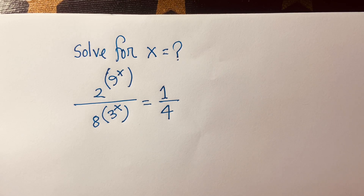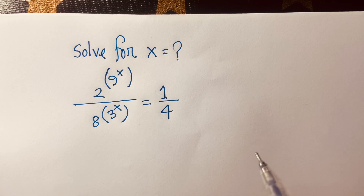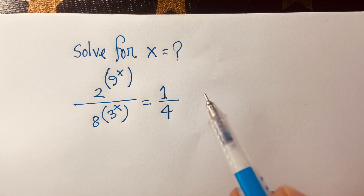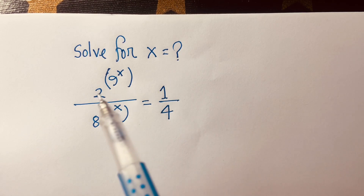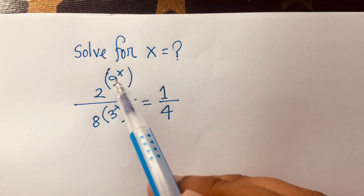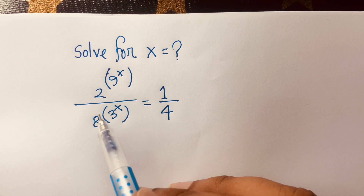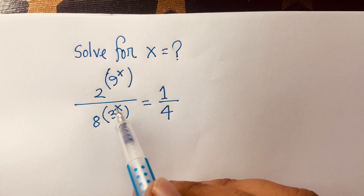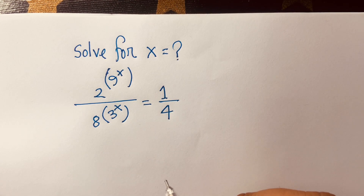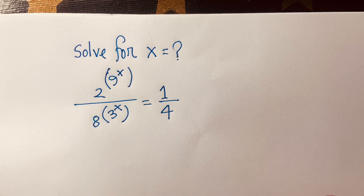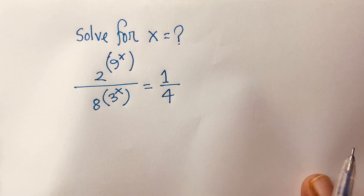Hello everyone. In this video I solve this exponential equation for x. Here is 2 to the power 9^x and here is 8^(3^x) is equal to 1 over 4. We will find out the value of x in this equation.